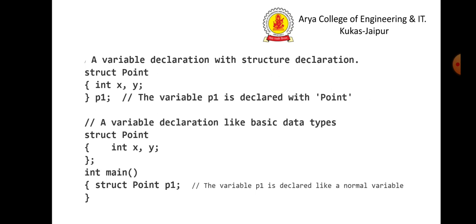See, here, in this example, we declared a variable or object of struct point p1. p1 variable can be declared at any place either at the end of a structure definition or in the main function.